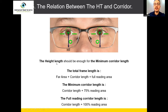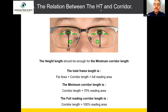Now, the relation between the height length and corridor length: the height length should be enough for the minimum corridor length. What is the minimum corridor length? The minimum corridor length is the corridor length plus 75% of the reading area, which is around 4 mm. So 4 mm represents approximately 75% of the reading area.